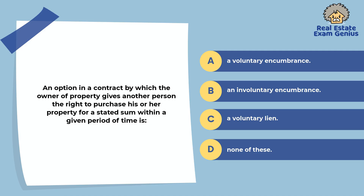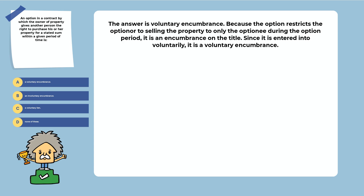An option in a contract by which the owner of property gives another person the right to purchase his or her property for a stated sum within a given period of time is: a voluntary encumbrance, an involuntary encumbrance, a voluntary lien, or none of these. The answer is a voluntary encumbrance. Because the option restricts the optioner to selling the property to only the optionee during the option period, it is an encumbrance on the title. Since it is entered into voluntarily, it is a voluntary encumbrance.